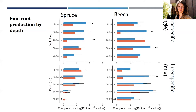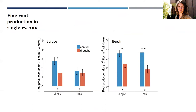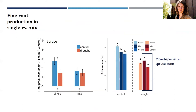Averaging results over depth layers to summarize: beech is equally affected by drought in both the single and mixed species zones, while spruce is only affected by drought in the single species zone but not in the mixed species zone. Part of this result for spruce may be explained by higher soil moisture in the mixed species zone — the soil water content in the drought plots of the mixed species zone is significantly higher than in the single species zone.